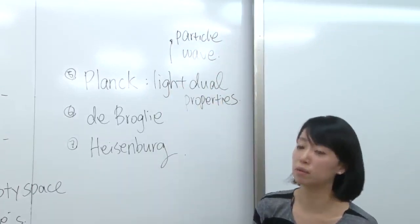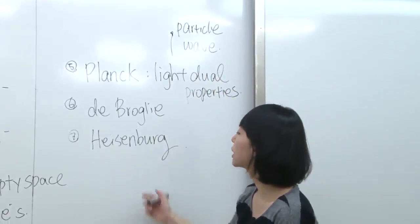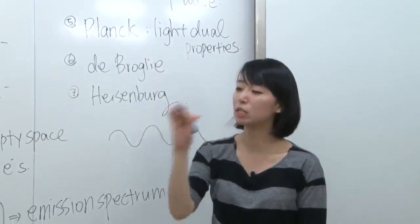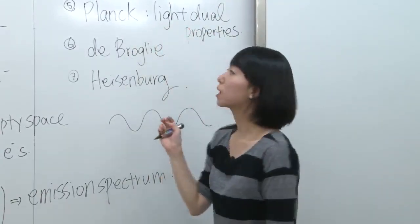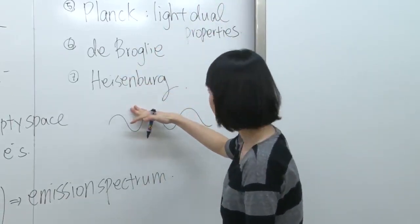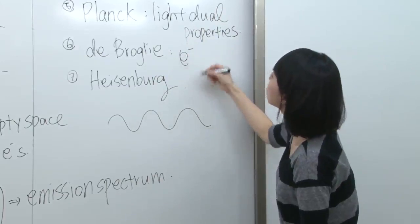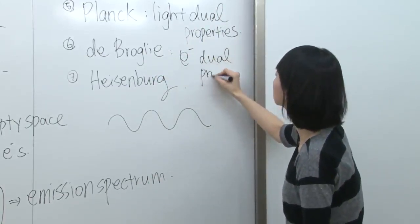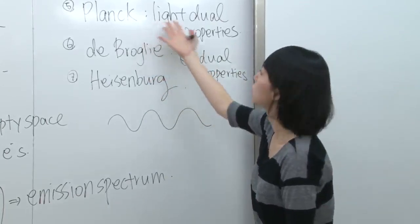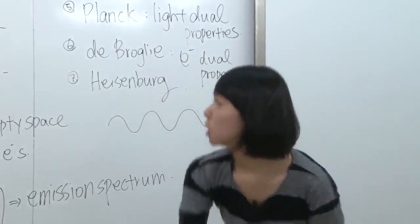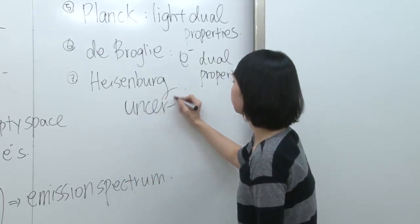Planck said light and photons could have dual properties. De Broglie and Heisenberg accepted this idea, and De Broglie said electrons also have dual properties. So De Broglie was about the electrons and Planck was about the light photons. That led to Heisenberg, who came up with the uncertainty principle. This is the major principle we talk about when it comes to electrons now — it's more modern compared to Bohr theory.